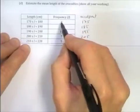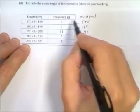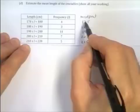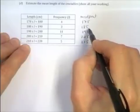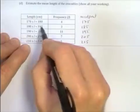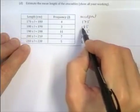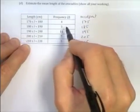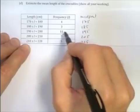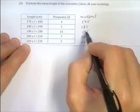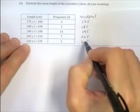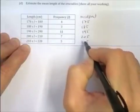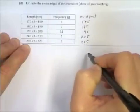Now we've got the midpoint. We're going to assume that these four crocodiles all had the length of the midpoint. So their total length is going to be 4 times that midpoint. And likewise here. We've got the midpoint of this second class. We're going to assume they were all 185. So to get the total length of those three, we do 3 times 185. In fact we're going to do the frequency times the midpoint for all of these, to find the total length of the crocodiles in each category. And we're going to add them all up to get the total length of all 30 crocodiles.